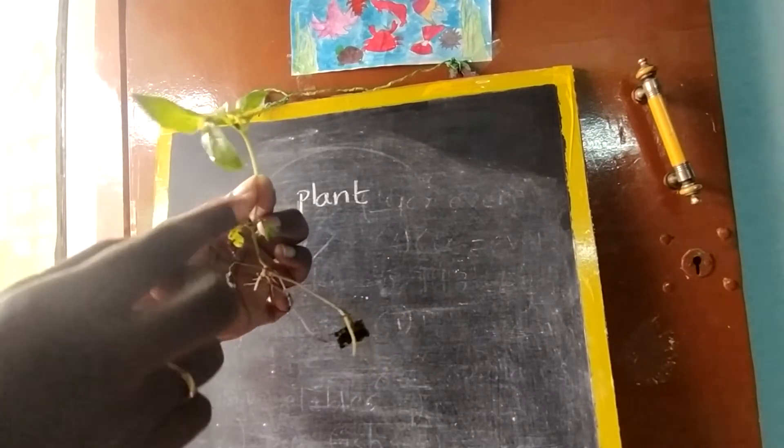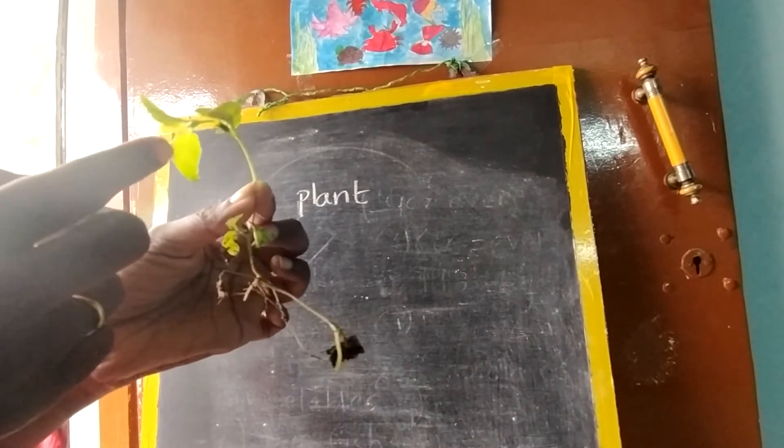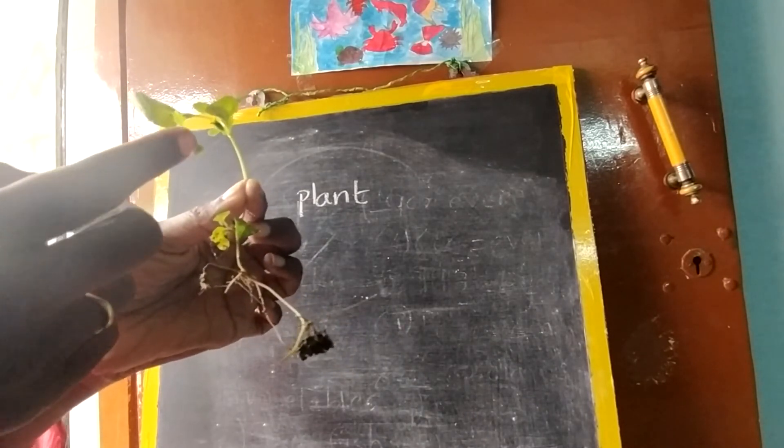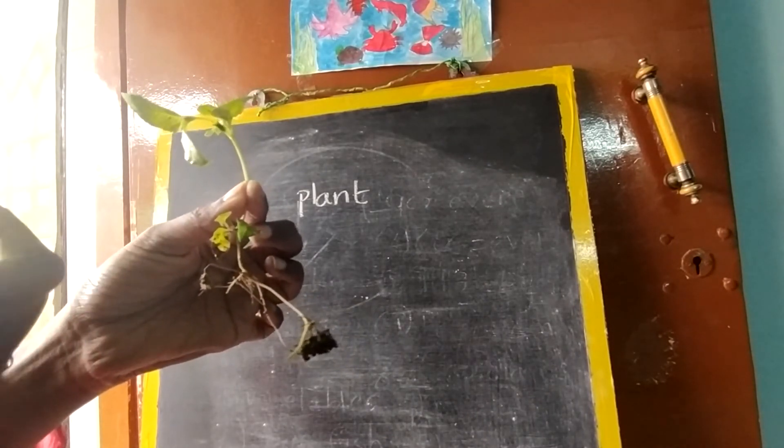This is a small plant, but also it has a flower. So when you take a big plant, what will happen? There will be even vegetable, fruit also.